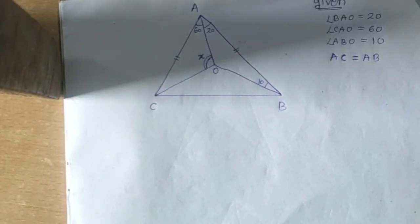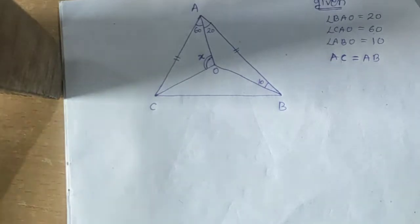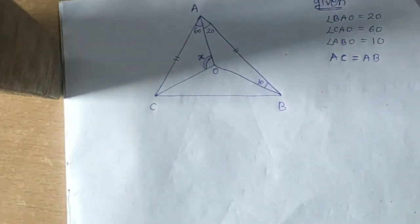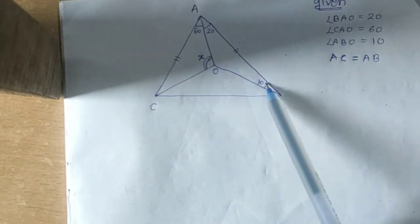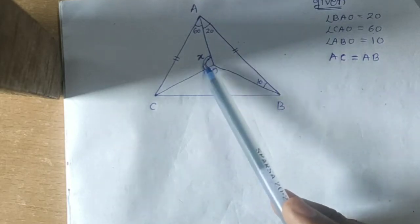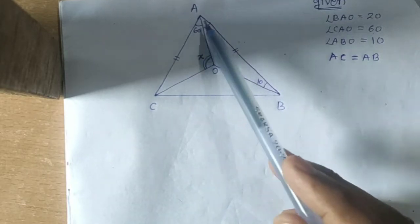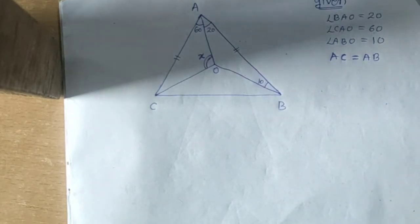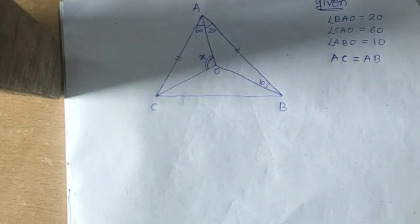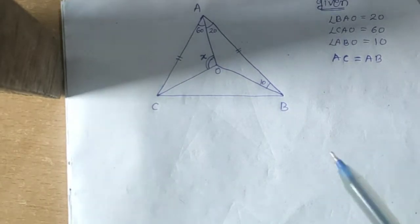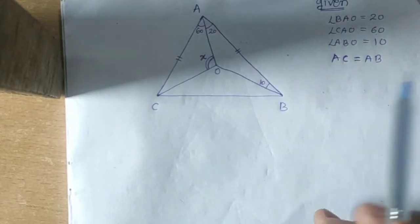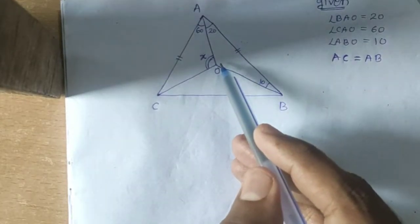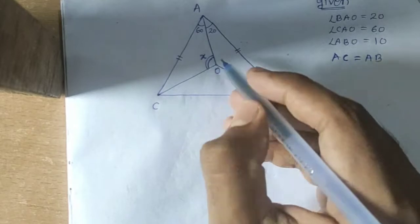Today we will solve a very special geometry question. In this question, this angle is 20°, this angle is 10°, this angle is 60°, and this angle is x. We have to find angle x, and it is given that AC equals PC. Before solving, by simple observation: since this is 20° and this is 10°, this angle will be 180 minus 20 minus 10, which equals 150°.